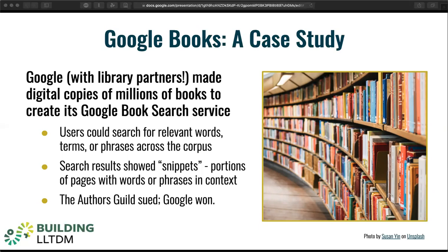When the Authors Guild sued, alleging infringement, Google argued that book search was a quintessentially fair use. The influential Second Circuit Court of Appeals agreed. The Authors Guild also sued HathiTrust and some of its members in a separate case with the same result: fair use.